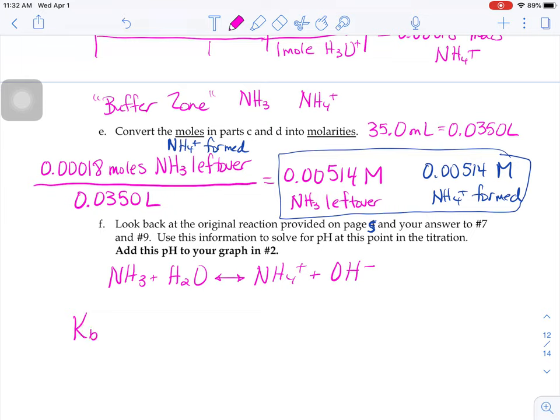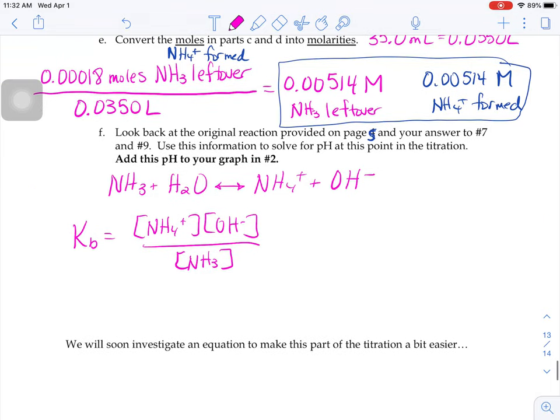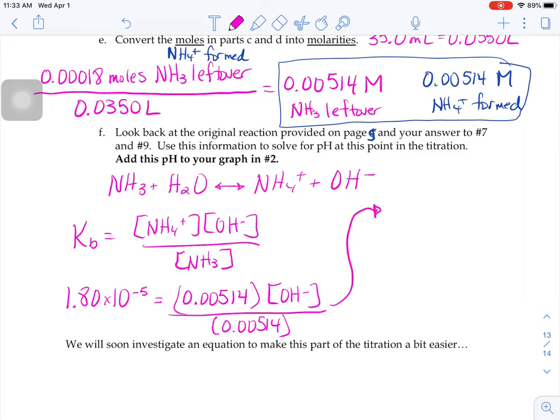We know that the KB value of that reaction would be NH4+ times OH- over NH3. From previous calculations, you guys found that the KB in this problem was 1.8 times 10 to the negative 5th. We just found out above that the molarity of the NH4+ is 0.00514. We don't know hydroxide. We know that this guy is also 0.00514. A little bit of algebra, you could solve for the concentration of that hydroxide. And because these guys will cancel, the hydroxide is 1.8 times 10 to the negative 5th.